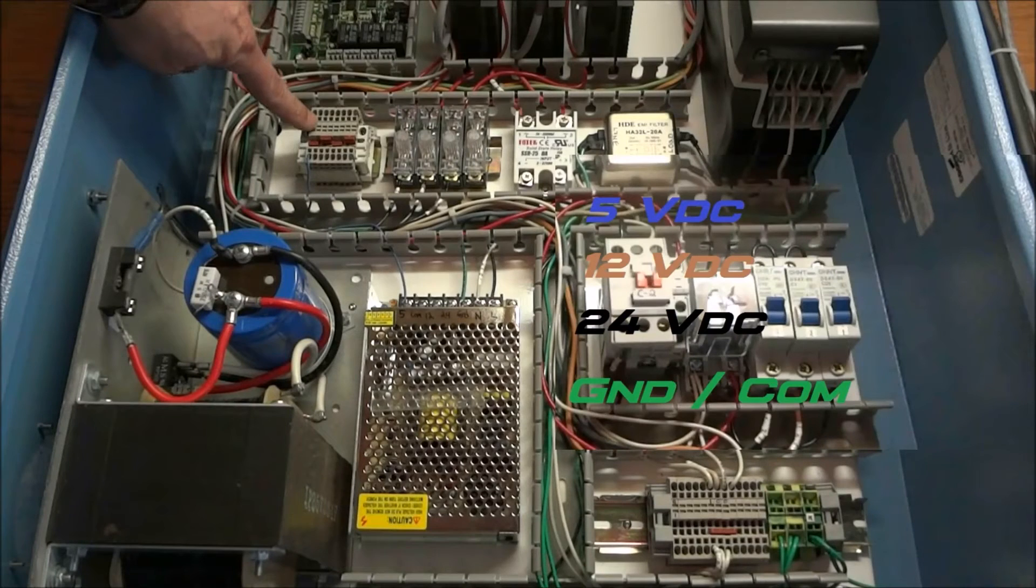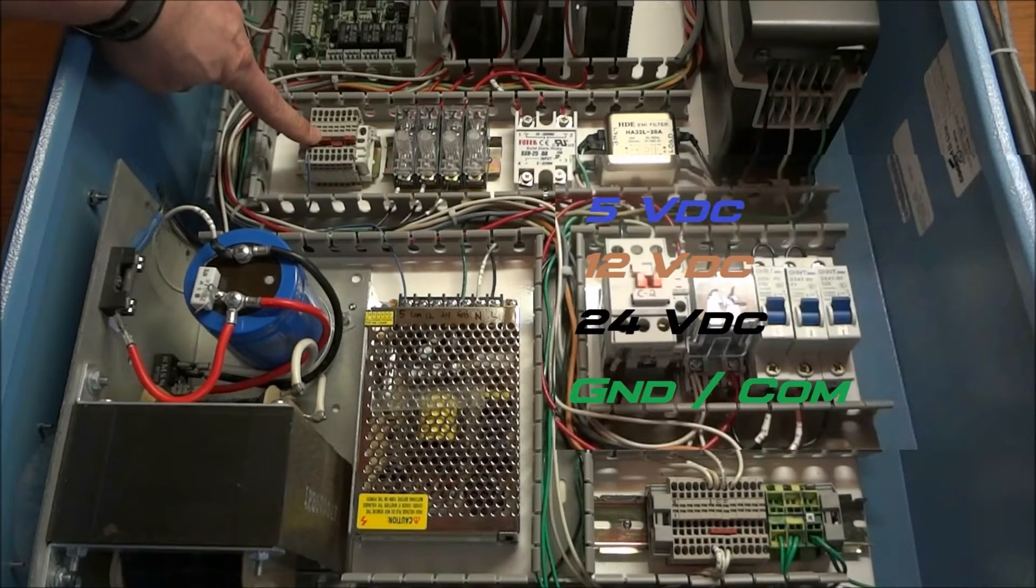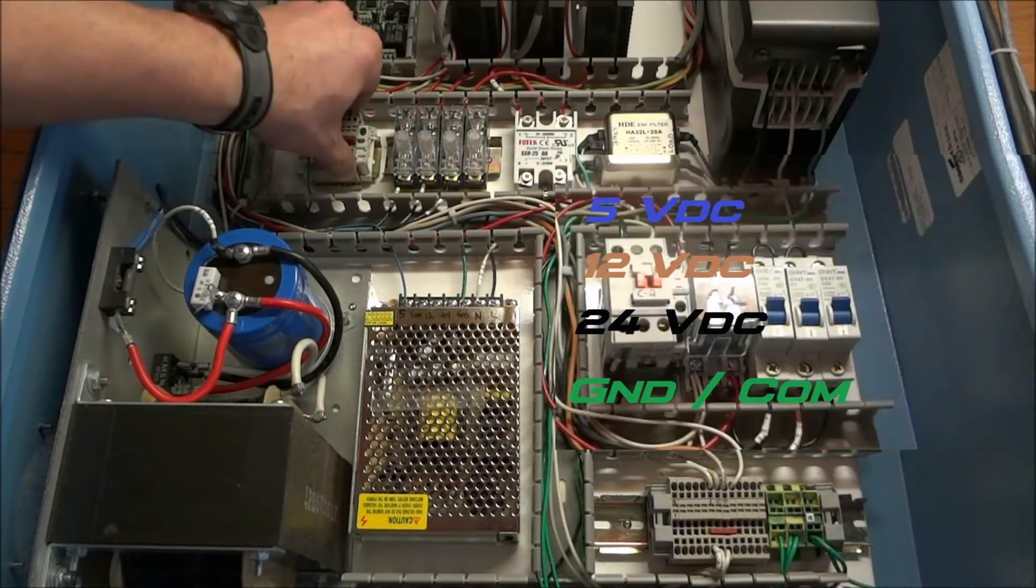And what I've done is just jump it over to this second terminal block. So I'll have two for 5 volts, two for 12 volts, two for 24 volts, and two for ground or my common.